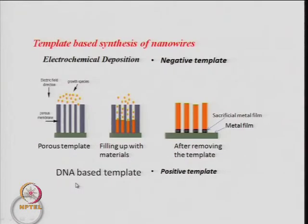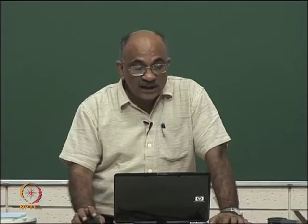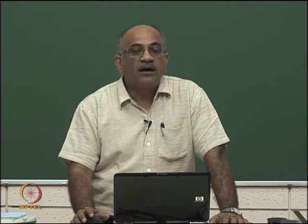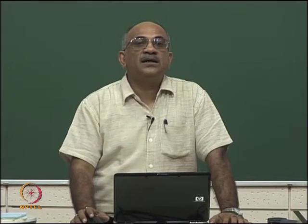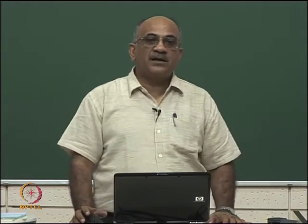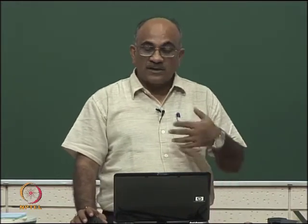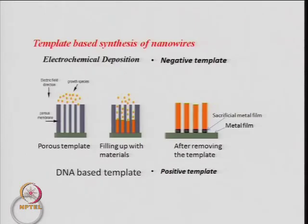An example of a positive template is DNA-based templates, where the nanowire grows on the DNA itself, not in voids. That is why it is called a positive template. One case of the positive template method discussed earlier is based on DNA.